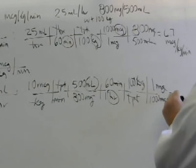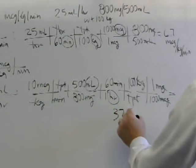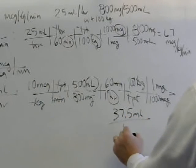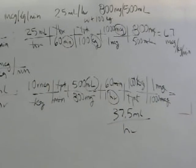At this point, then, I pull out my calculator, and my calculator tells me that I'm going to infuse this order of 10 micrograms per kilogram per minute. I'm going to infuse it at 37.5 mls per hour.